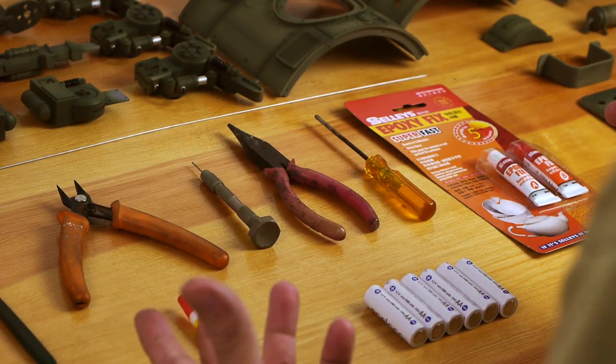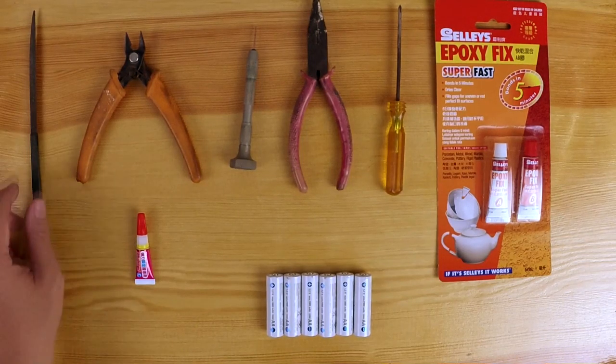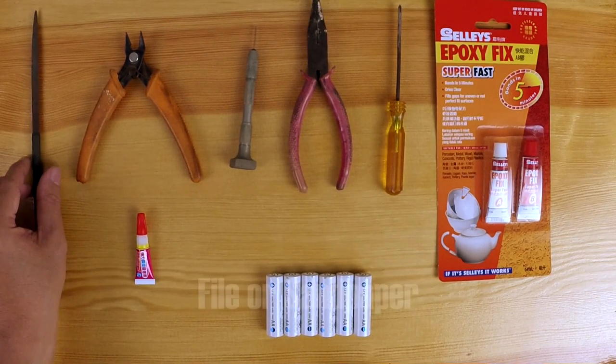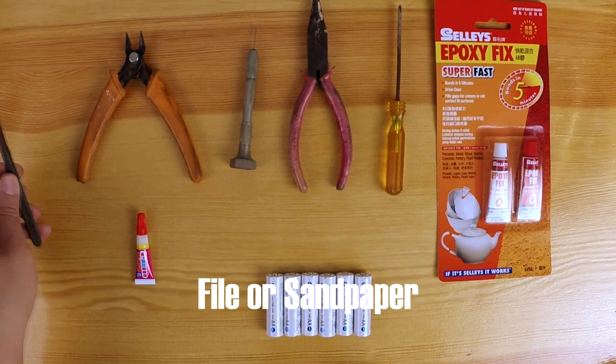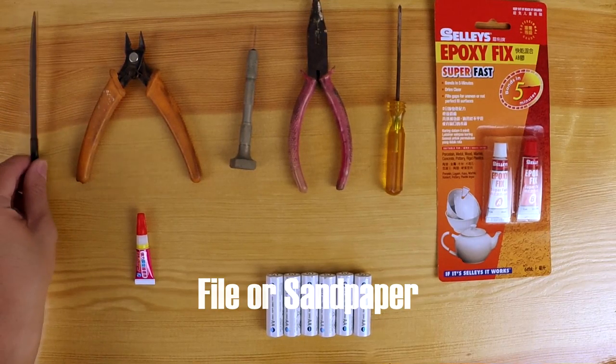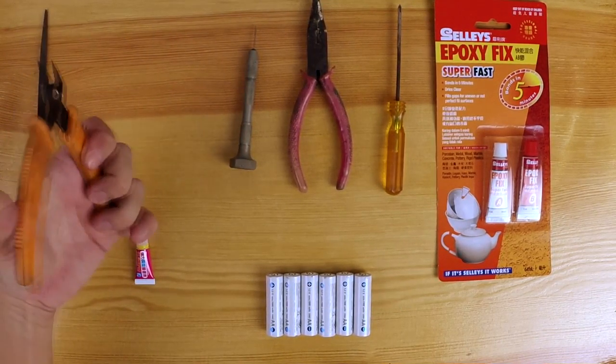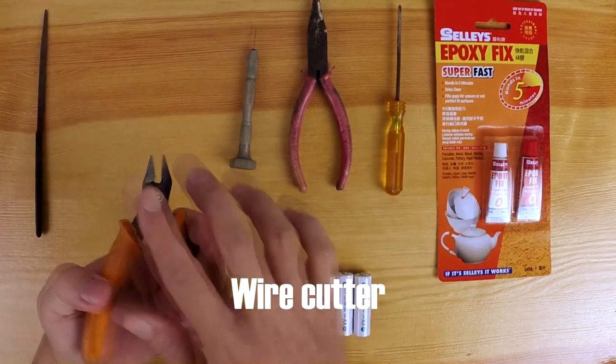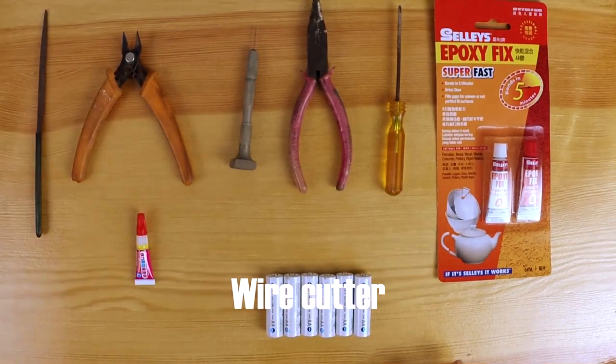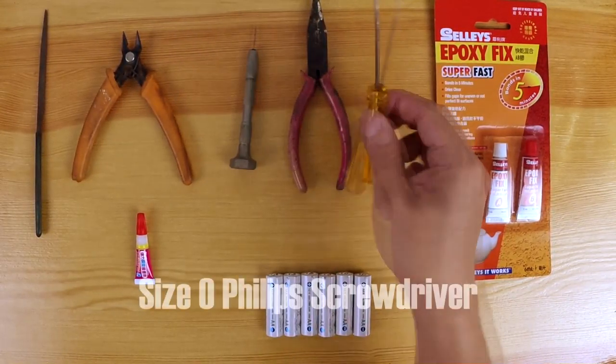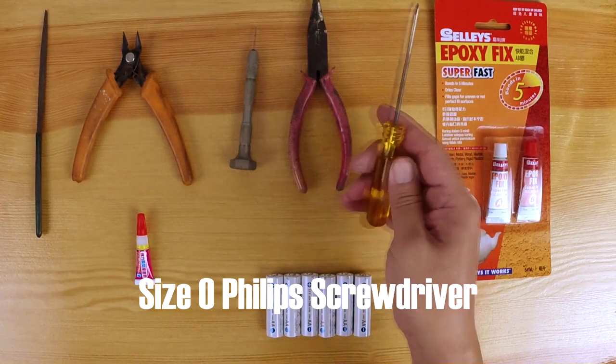I'm going to first show you what kind of tools will be needed for this project. You'll need a file, sandpaper, a wire cutter with a flat edge—that'll be the best—and a size 0 screwdriver or 3mm screwdriver.